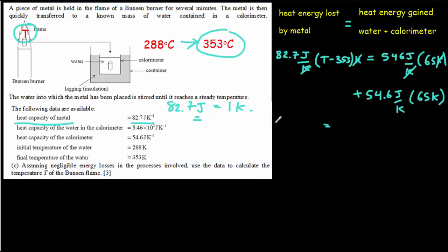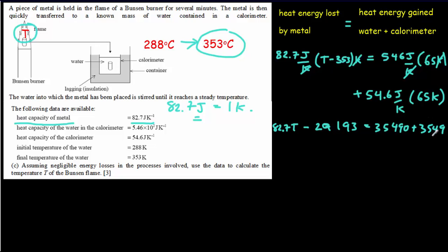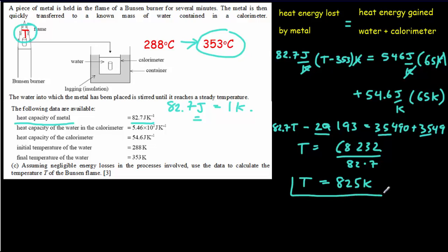Multiplying everything out: on the left, 82.7 times T minus 353 times 82.7, which is 29,193. On the right, 546 times 65 gives 35,490 and 54.6 times 65 gives 3,549. Solving for T: we add 35,490 plus 3,549 plus 29,193 to get 68,232, then divide by 82.7, giving an answer of 825 degrees Kelvin — the temperature of the flame and the original temperature of the metal.